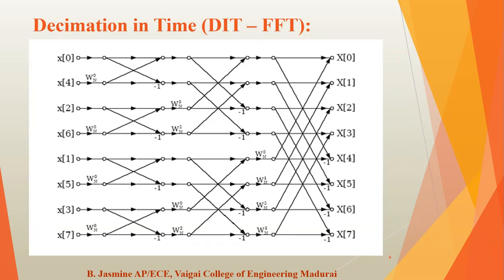This is the decimation in time — the basic butterfly diagram for FFT. The number of samples is given in the problem. On the input side, bit reversal order is performed. We can see what bit reversal order is in the next slide. Then we have to substitute the twiddle factor. W_N^0 is the twiddle factor representation. This twiddle factor is placed before the butterfly lines in decimation in time. In the inverse DIT, the twiddle factor is placed after the butterfly lines. For every 2^N lines, minus 1 is added.